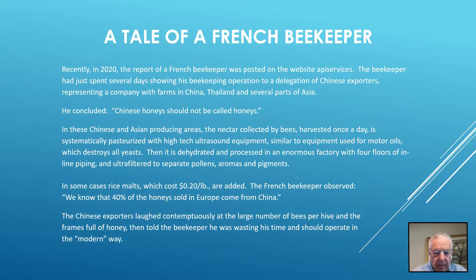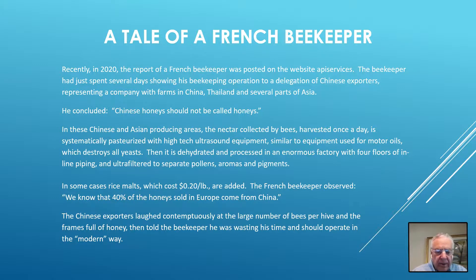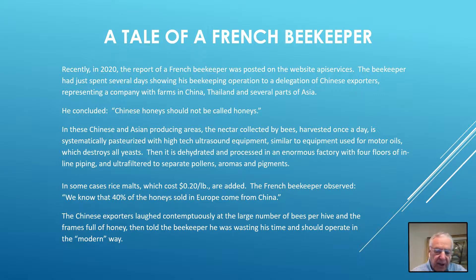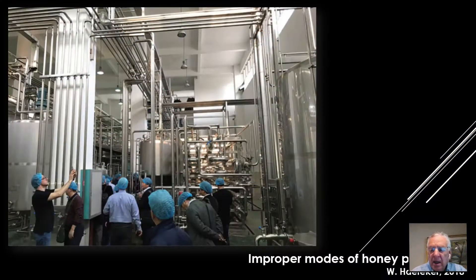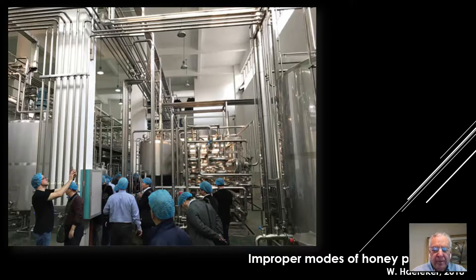Recently, a report was published describing French beekeepers who were interacting with a Chinese delegation in France. The beekeepers were confronted with mockery as they described the French modes of production — similar to American, Canadian, and Argentine modes of producing authentic honey — as archaic. Here is a slide from Walter Hefecker, president of the European Beekeepers Association, showing a Chinese factory which he described as comparable to a European modern brewery. These are not the classic modes of production of honey.